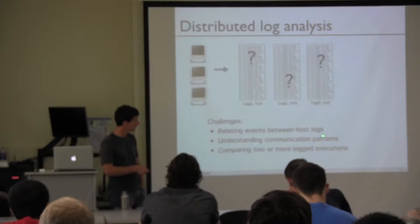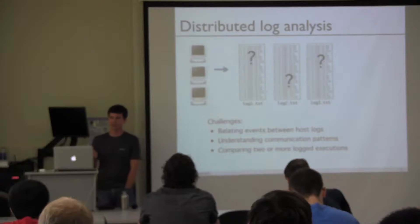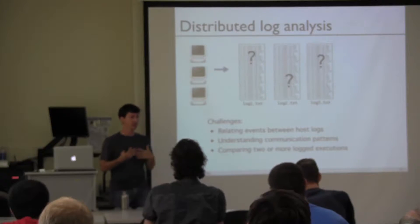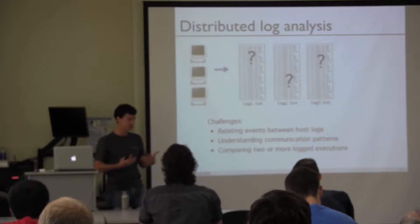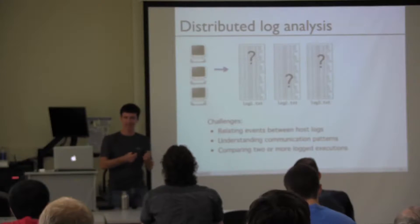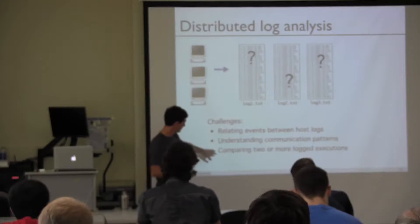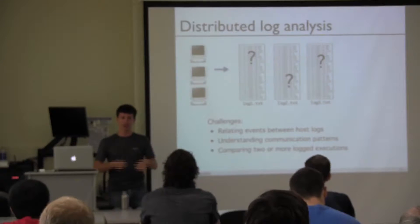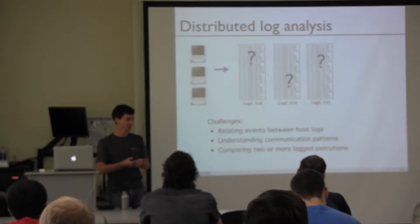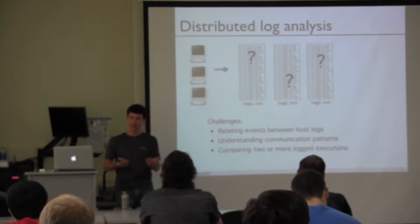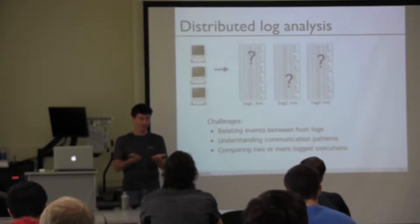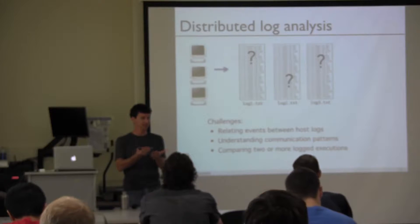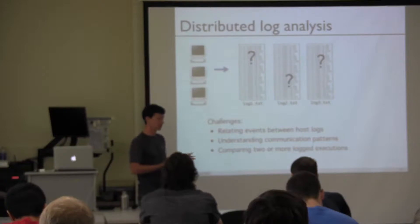Another challenge is that it's hard to understand the underlying communication topology within the system. The log messages themselves have a certain interleaving and concurrency, so it's difficult to tell what happened before something else and what the actual communication pattern is. And if I have a bug in my system and try to fix it, how do I know I actually fixed it? From a log analysis perspective, you want to compare the two logs and see the difference — but today there are really no tools to facilitate this process.